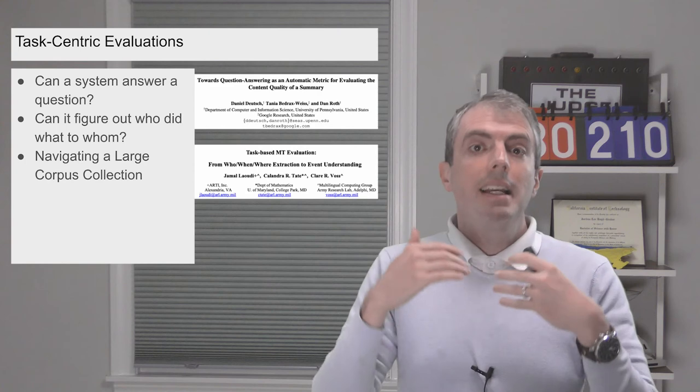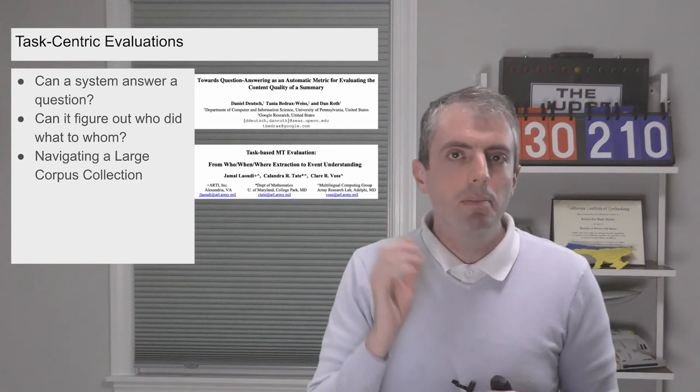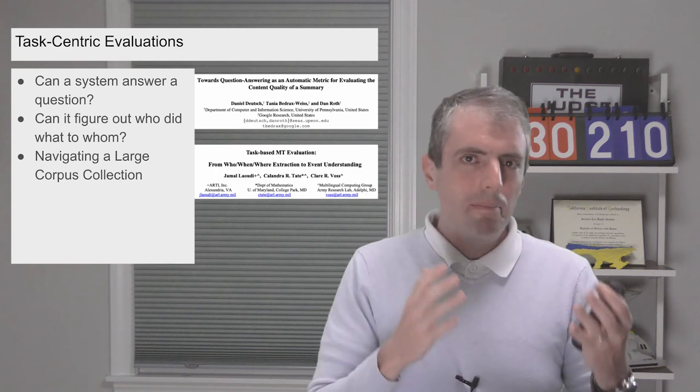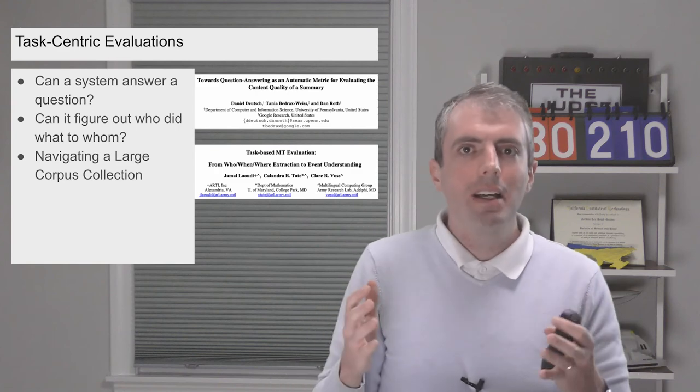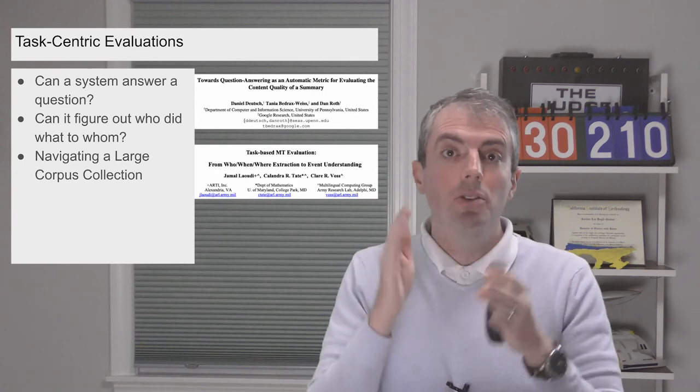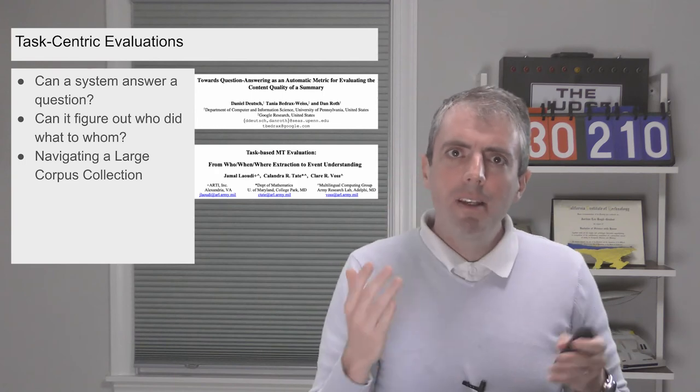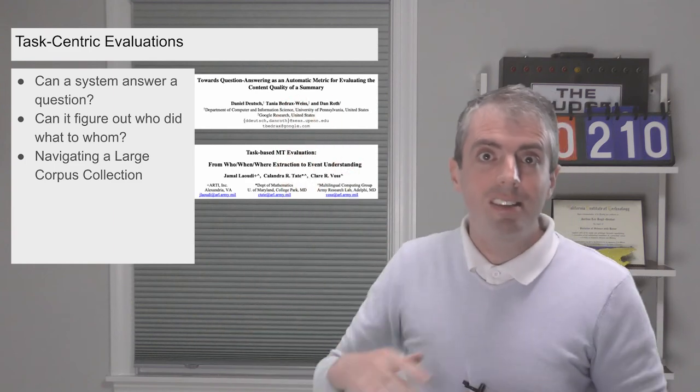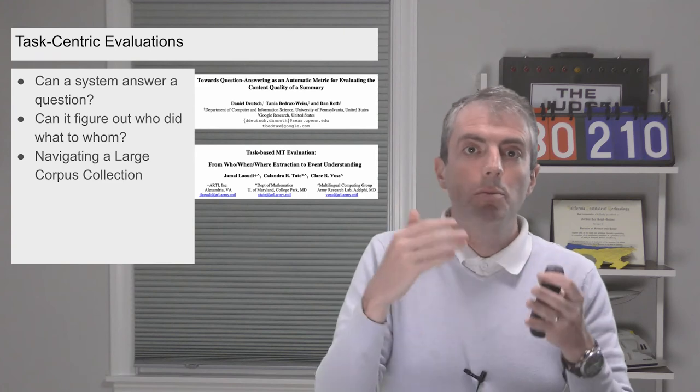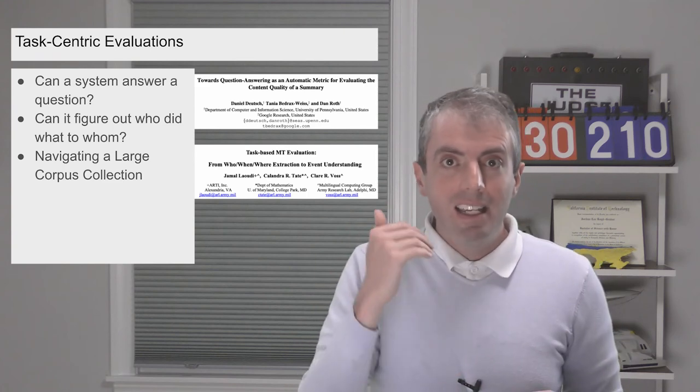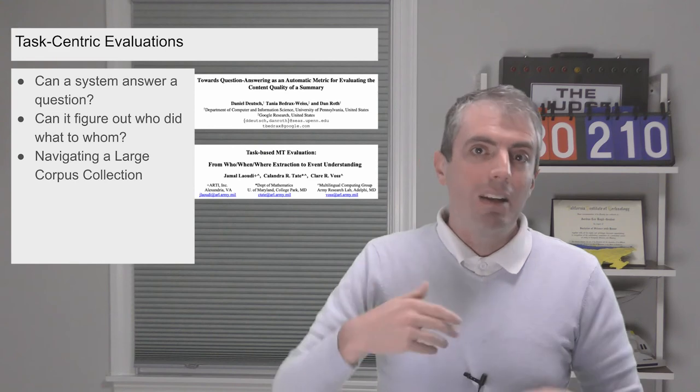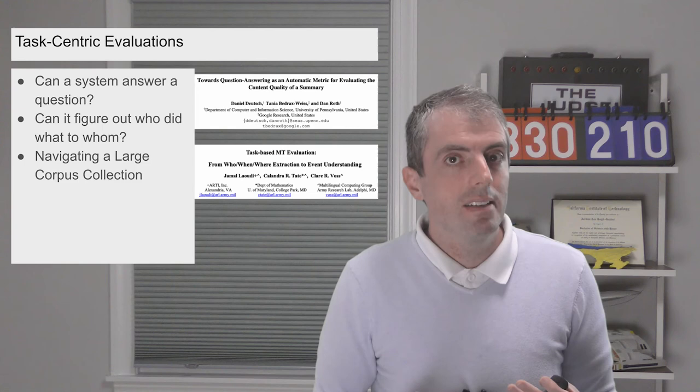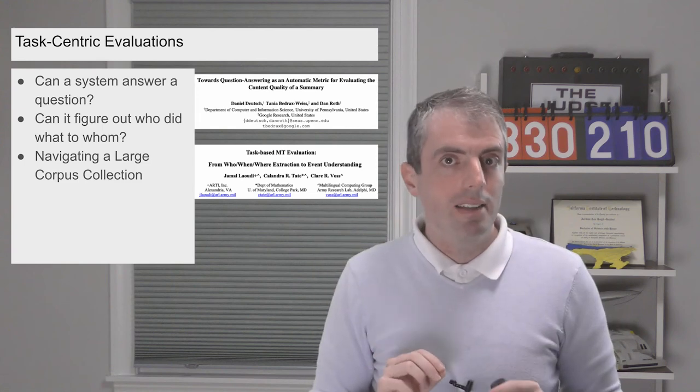But in my opinion, I think we should focus more on task-centric evaluations. Machine translation is used for different applications, and one application might need a different evaluation from another. So if you care about just extracting a single answer to a question, you should probably evaluate downstream question answering instead of the raw translations. If you care about understanding the relationships between entities, an information extraction evaluation might be better. And if you care about sensemaking, you might not care so much about the nuance of individual sentences so long as the themes line up across languages.